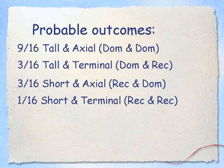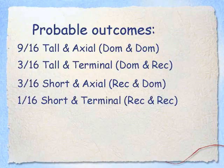If you go back and look at your data, you'll see that 9 out of 16 will display tall and axial phenotypes — both dominant. Three out of 16 will be tall and terminal — dominant with recessive. Another 3 out of 16 will be short and axial — recessive and dominant. And 1 out of 16 will be short and terminal — both recessive traits. This 9:3:3:1 ratio is an important ratio to know when you do a dihybrid cross with two heterozygous parents for both traits.